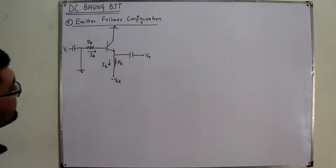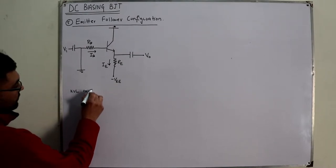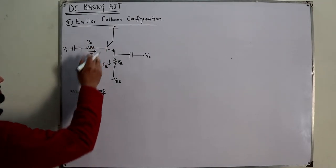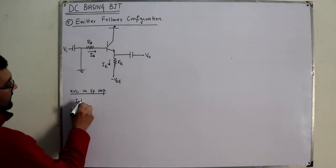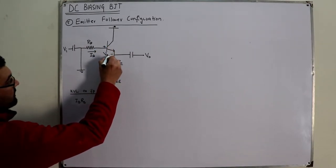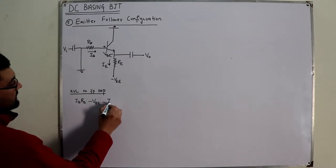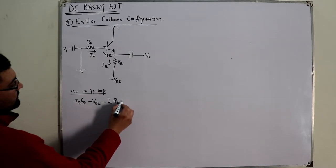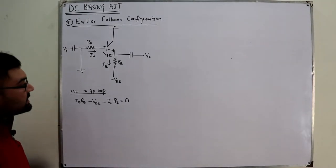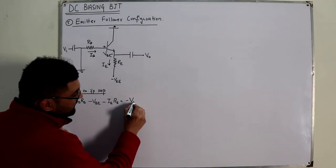Let us apply KVL to the input loop. What we have is: negative IB·RB, minus VBE — the drop of the forward-biased diode — and then minus IE·RE. This is not equal to zero; it is equal to negative VEE.